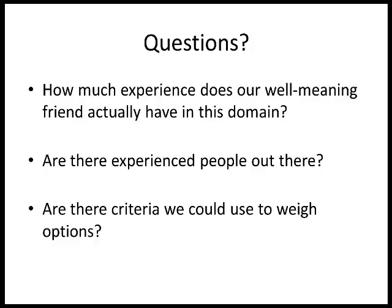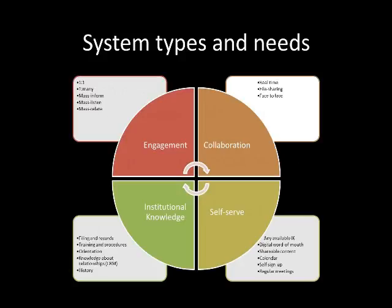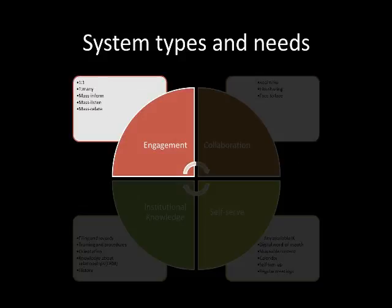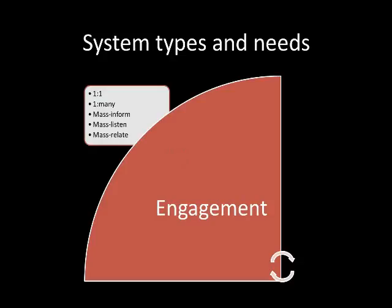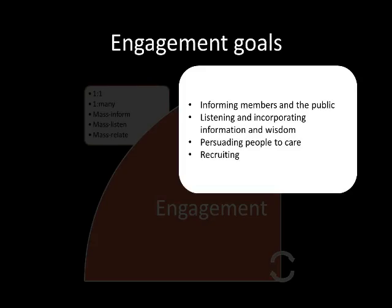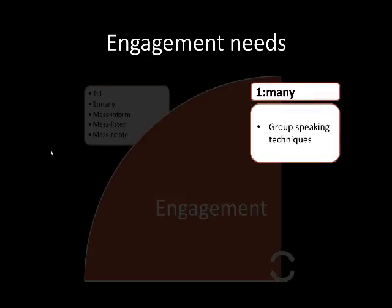But first we need to know a little more about the problems we're trying to solve. There are four types of systems, starting with engagement. As we consider systems for engagement, it's important to keep our goals in mind — it's really about developing relationships, and technology allows us to develop these relationships on a wider scale. Let's not forget about face-to-face communication — in many cases that's the best technology for developing relationships, though it's not as flashy as social media so it can often get overlooked.